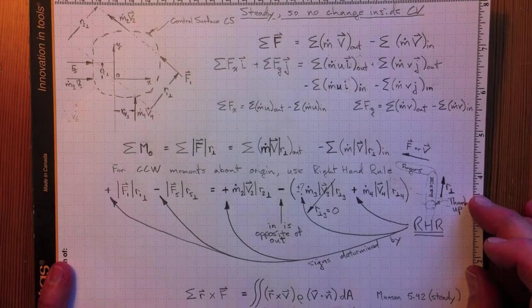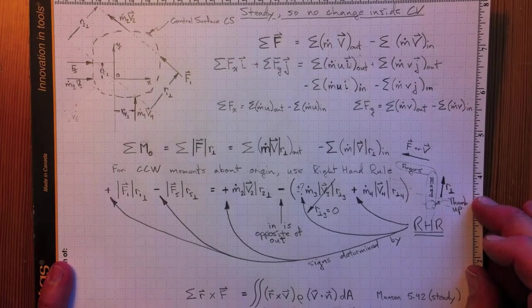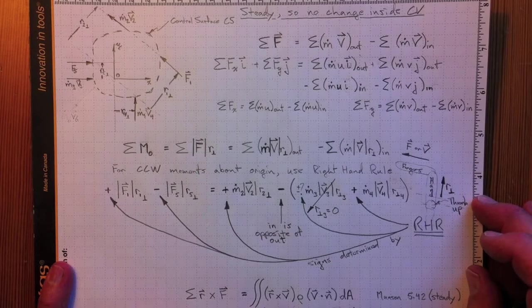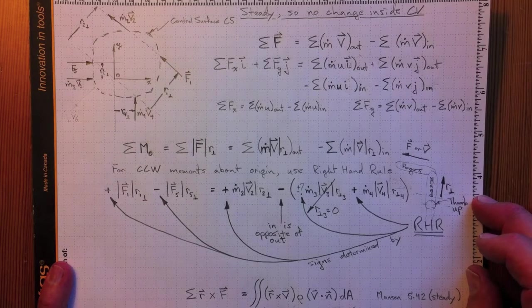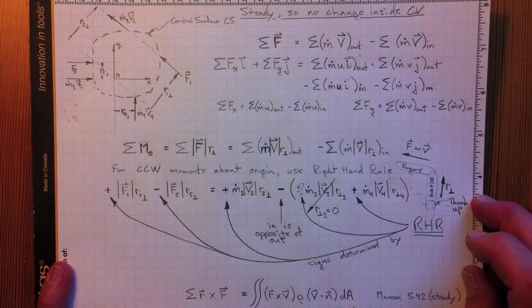The Moment of Momentum Equation uses cross products and integrals over surfaces and volumes and can be a little bit difficult to follow. Here's a simpler explanation of what's going on.